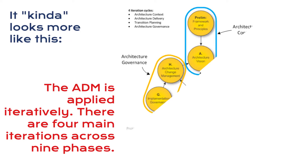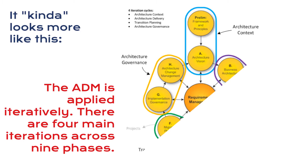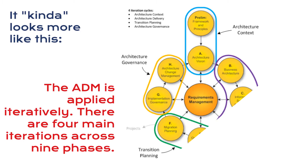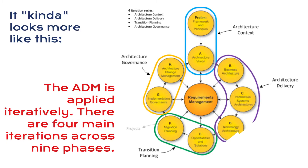The four main iterations are: the architecture context iteration, the architecture delivery iteration, the transition planning iteration, and the architecture governance iteration.